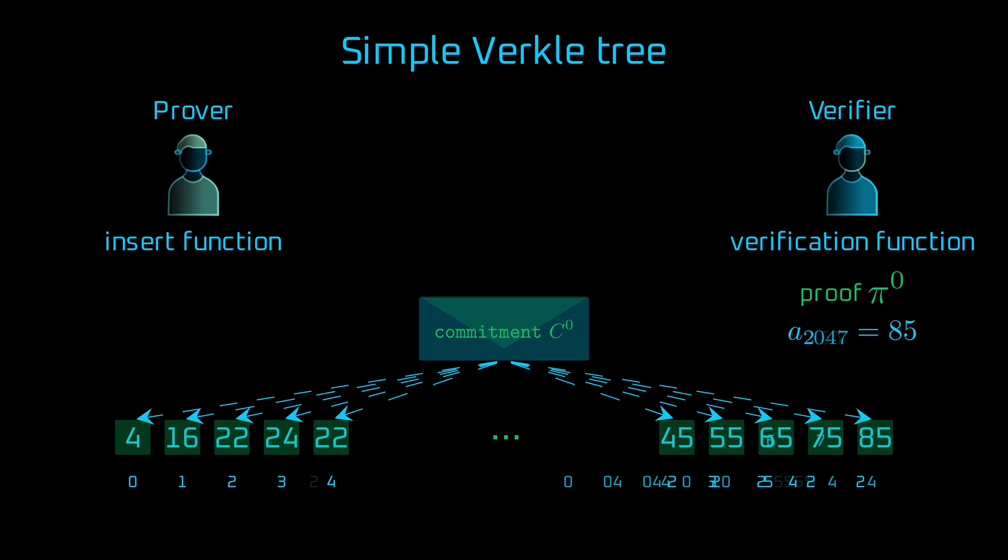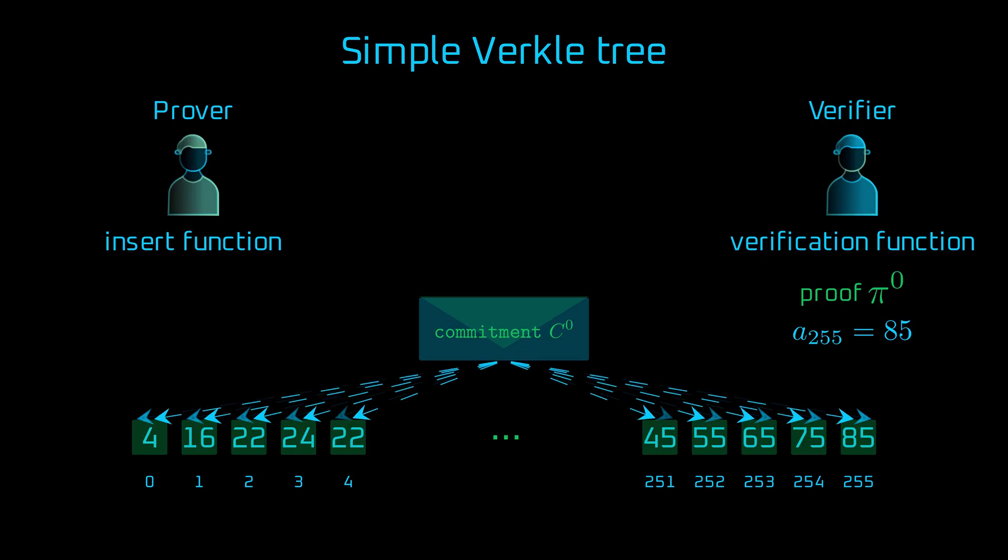Ethereum verkle trees propose to use 256 children per node. You might have noticed that such a simple verkle tree is similar to an Ethereum blob. And you would be right!